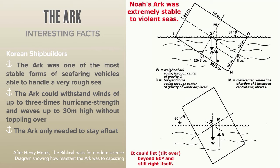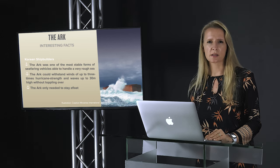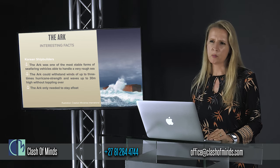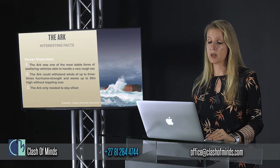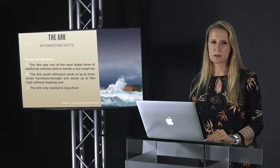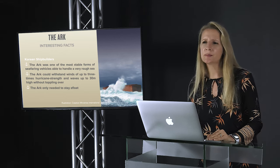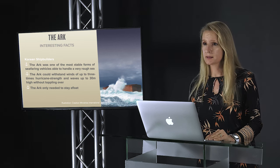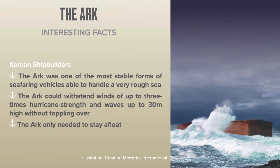Korean shipbuilders found the ark, as described in the Bible, to be one of the most stable forms of seafaring vehicles able to handle very rough seas. According to them, the ark could withstand winds up to three times hurricane strength, waves up to 30 meters high and possibly even higher, and could tilt beyond 60 degrees without toppling over. Terrible things were happening in the earth's crust during the flood — earthquakes, tsunamis, volcanic eruptions, boiling fountains of water jetting out. The ark didn't need a streamlined design; it only needed to stay afloat.